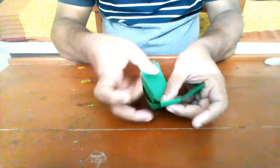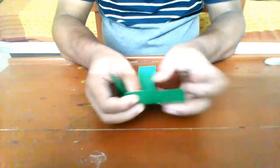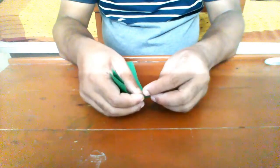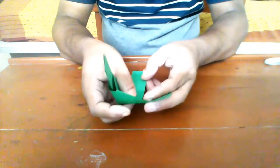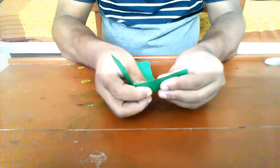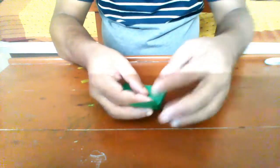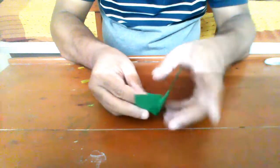Slowly the shape of the propeller will emerge before you. At this point you are almost done making the propeller, just we have to tighten the flaps. You can apply glue on the flaps so that they stay in place.